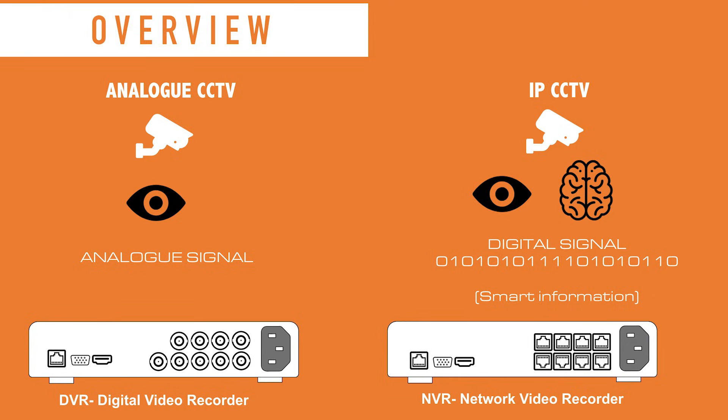What that means is the brain can do extra work for you. For example, in more complex systems where you're trying to record number plates, only an IP system would allow you to actually extract that data. Whereas an analog camera, although it might be able to see a picture or a number plate, it would not be able to extract that data the way an IP system can.